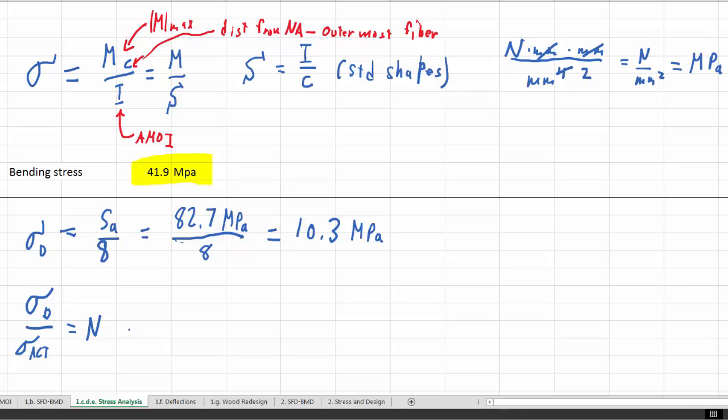So if we had a design stress of 400 megapascals and an actual stress of 100, we'd have four times the strength that we actually need over what our material should take. So if we calculate this with 10.3 megapascals and we divide that by 41.9 megapascals, well, we end up with an n of 0.25.